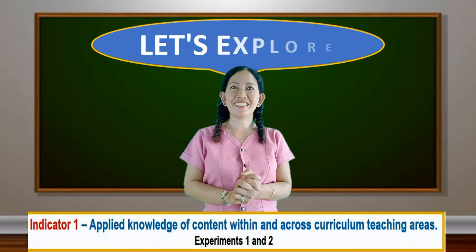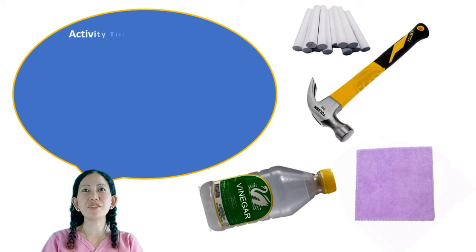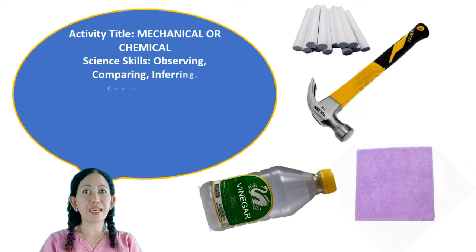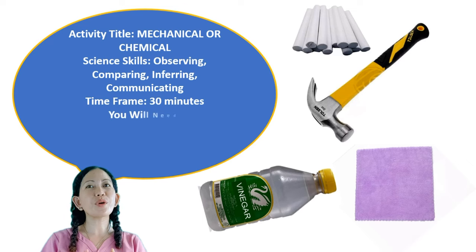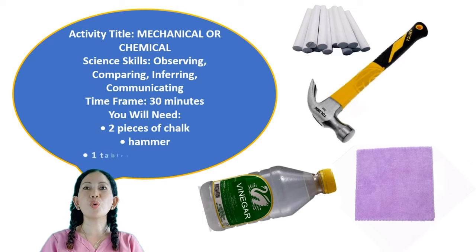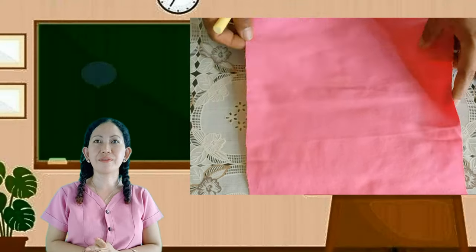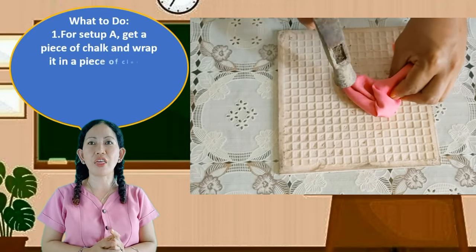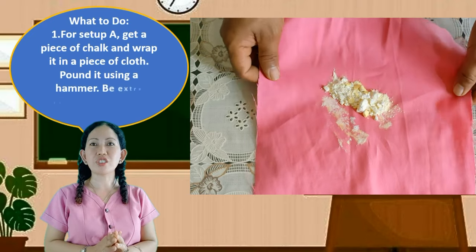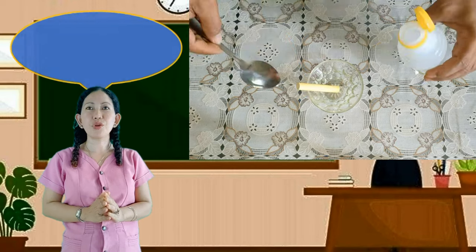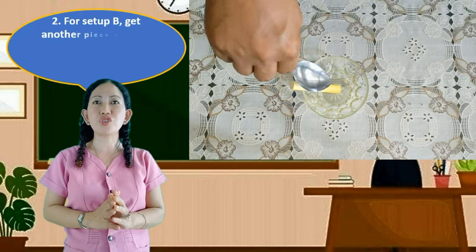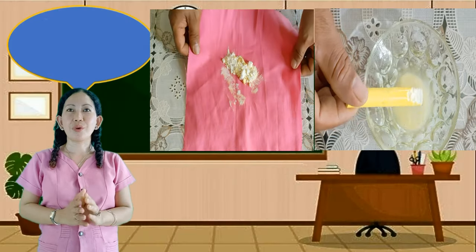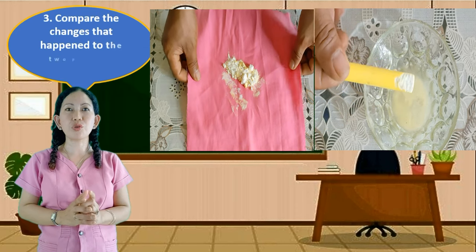Let's explore. Let's have an activity titled 'Mechanical or Chemical.' Science skills: observing, comparing, inferring, and communicating. Time frame: 30 minutes. You will need 2 pieces of chalk, a hammer, 1 tablespoon of vinegar, and a piece of fine cloth. For Setup A, get a piece of chalk, wrap it in the cloth, and pound it using a hammer — be extra careful. For Setup B, get another piece of chalk and pour vinegar on it. Observe what will happen. Compare the changes that happened to both pieces of chalk.